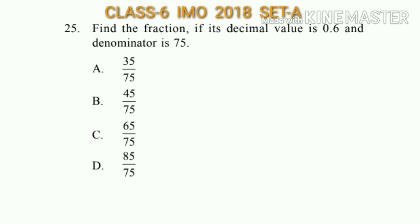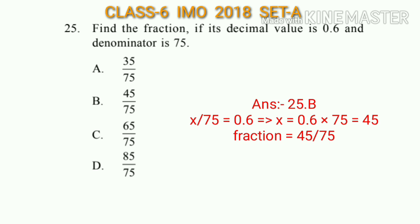Question number 25: Find the fraction if its decimal value is 0.6 and the denominator is 75. Let the numerator be x, so x/75 = 0.6, therefore x = 0.6 × 75 = 45. The fraction will be 45/75, which is option B.